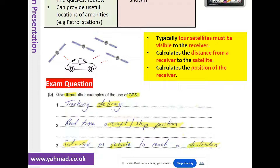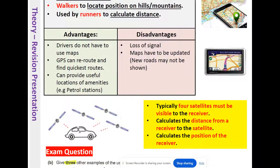For example, I use an app called Talibat — when food is on its way, you can actually see where the delivery driver is, so you can get ready to receive them. Other examples include real-time aircraft or ship position tracking, and sat-nav GPS in your vehicle to reach a particular destination.